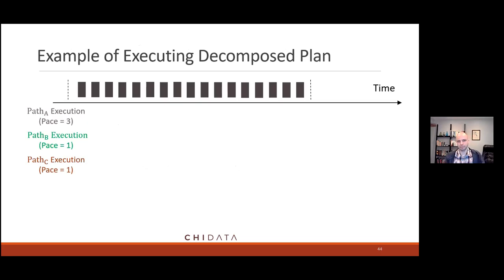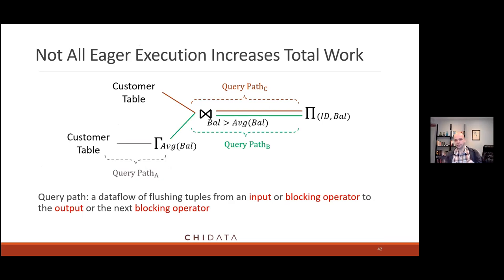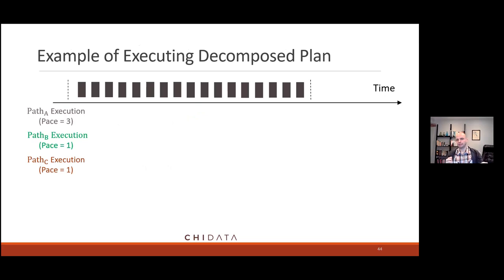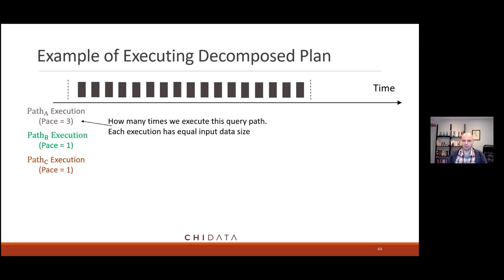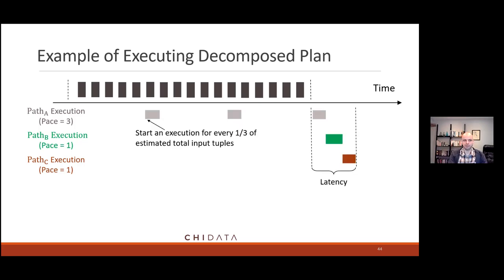We use a simple example with paths A, B, and C. I have a query, a point in time now, and a point in time in the future. What we're trying to figure out is how eager each path should be. We use the term 'pace' — how many times should I execute this sub-part of the query by the end. If path A has pace three, execute that sub-part three times. If it's one, that means batch: wait till the end and do it once. We evenly divide execution for uniform data arrival, with dependencies between paths respected — children can't run slower than parents.